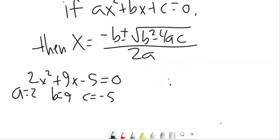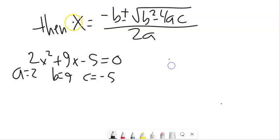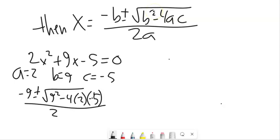X must equal negative B, so negative 9 plus or minus the square root of 9 squared. I'm just going to plug them in for now. It's times 4 times A times C all over 2 times A.